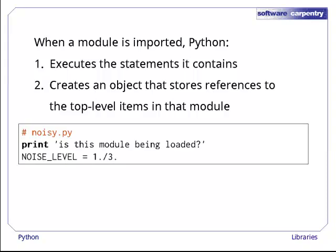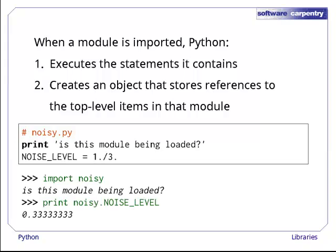For example, let's create a file called noisy.py that prints out a message and defines noise level to be 1 over 3. When we import noisy, the first statement, the print, is executed, displaying a message on the screen, and the variable noise level is assigned a value, which we can access as noisy.noiselevel.